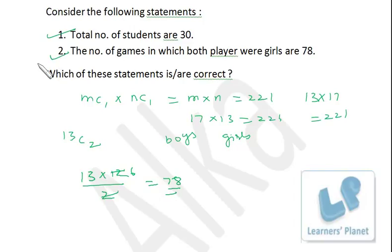Similarly, if you have to find out that how many games were there in which both the players were boys, that is 17C2. Obviously, we don't have to calculate it over here. But I am just telling you how to calculate that.